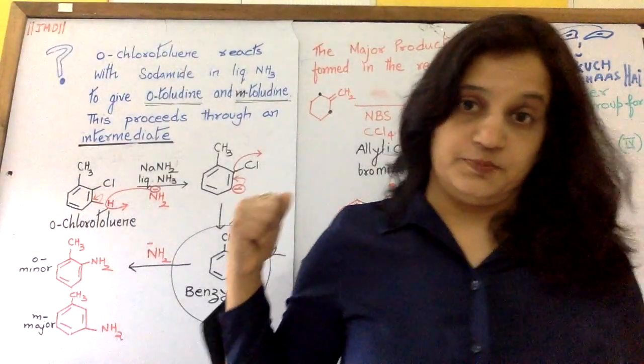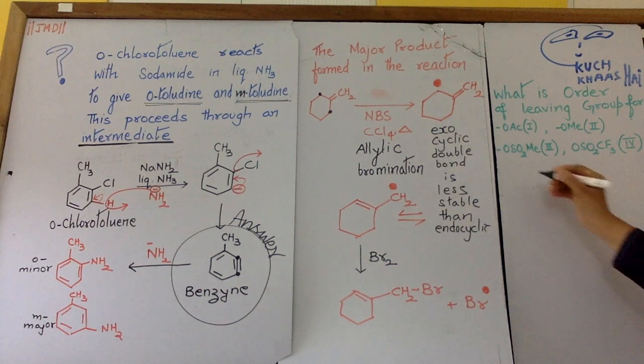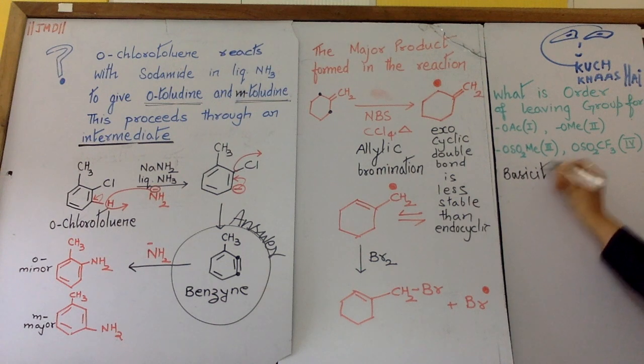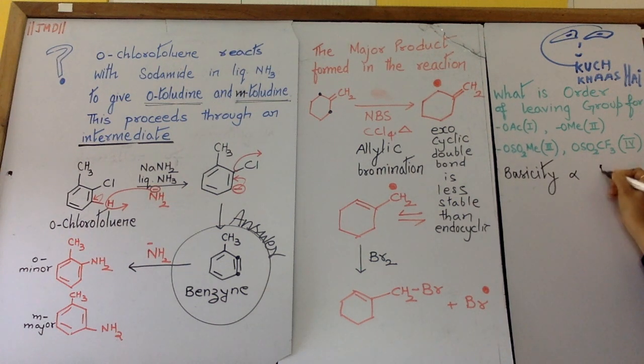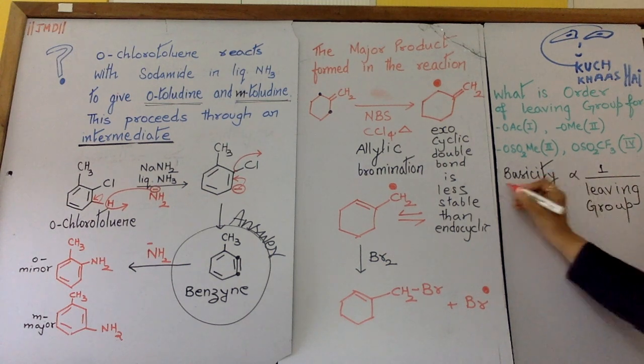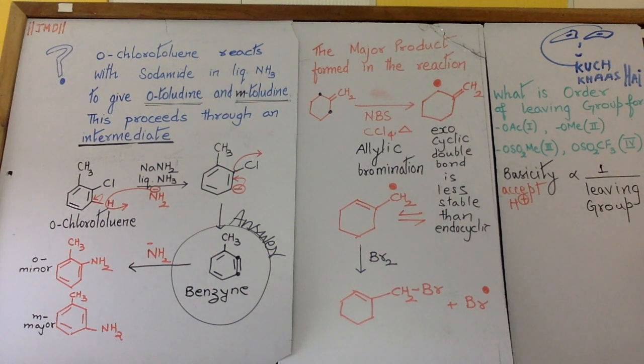What is the order of leaving group? First you should understand, order of leaving group needs what? Basicity is inverse to order of leaving group. The one who is having more basicity is a bad leaving group. Now what is basicity? Tendency to accept proton. You can refer lecture 24, 26 in halogen derivatives of alkanes and arenes.